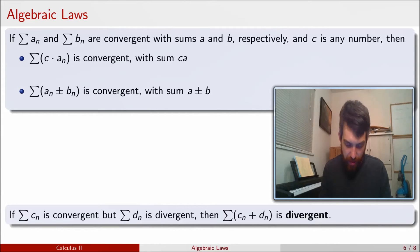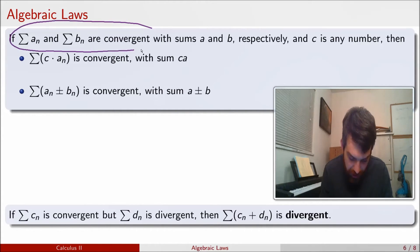You'll note here that one of the most important parts about what I've written down is this assumption. It says that if the Aₙ's and the Bₙ's are convergent, then we get this property. If one of them diverges, then it diverges.